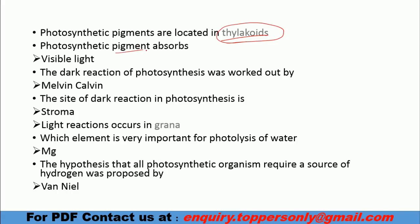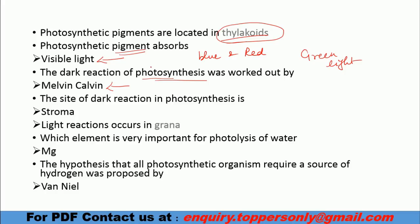Photosynthetic pigments are located in thylakoids. They absorb light in the visible light region. Maximum photosynthesis occurs in blue and red light. Green light is least effective for photosynthesis. Photosynthesis has light reactions and dark reactions — dark reactions do not need light. The Calvin cycle is the dark reaction, named after Melvin Calvin. Dark reactions occur in the stroma and light reactions occur in the grana.